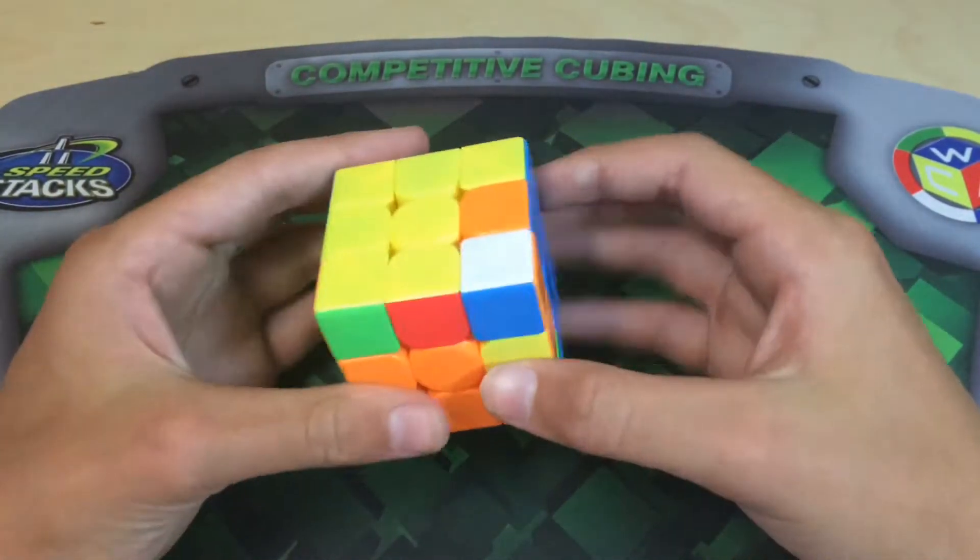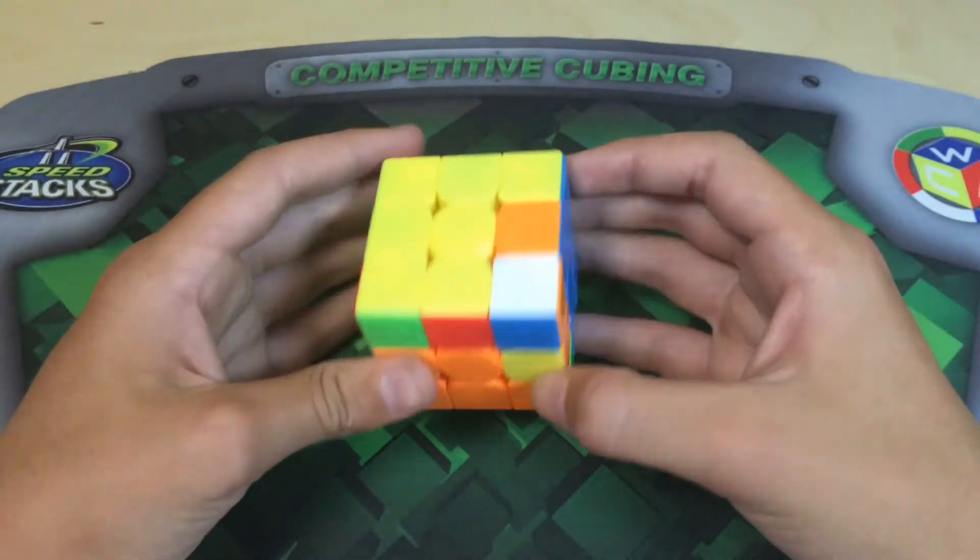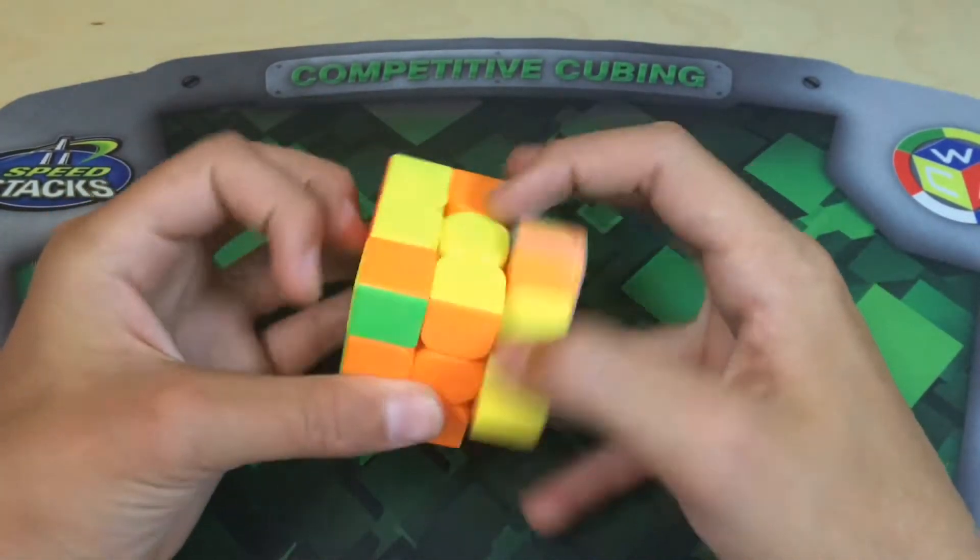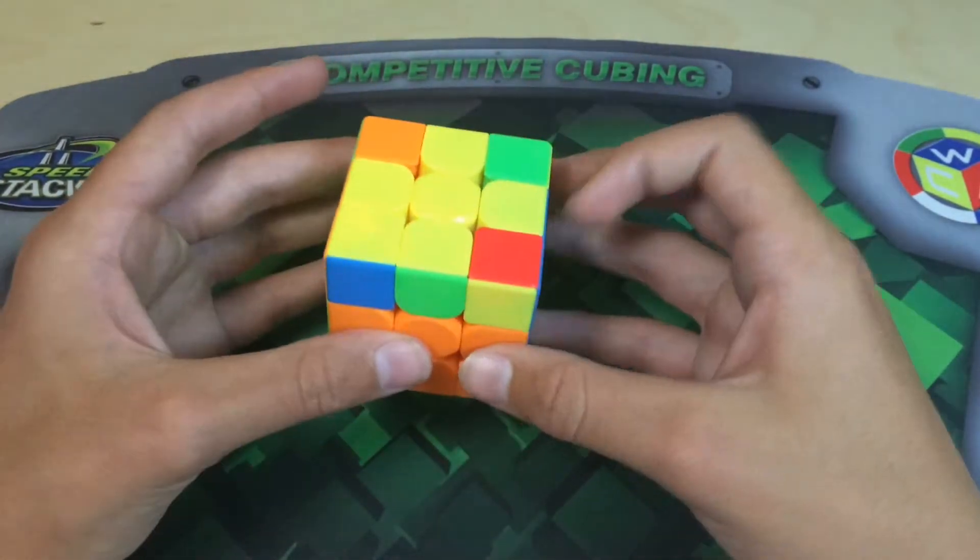And now you can solve your F2L pair just like we did for the four good edges case using no F or B moves and no rotations. And that will keep all your edges good.